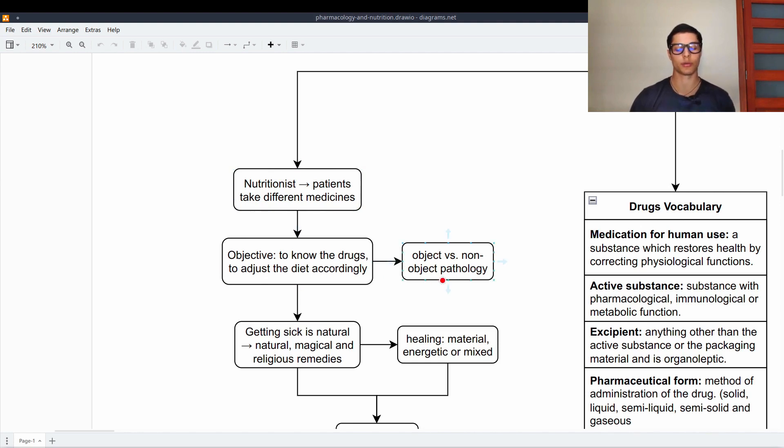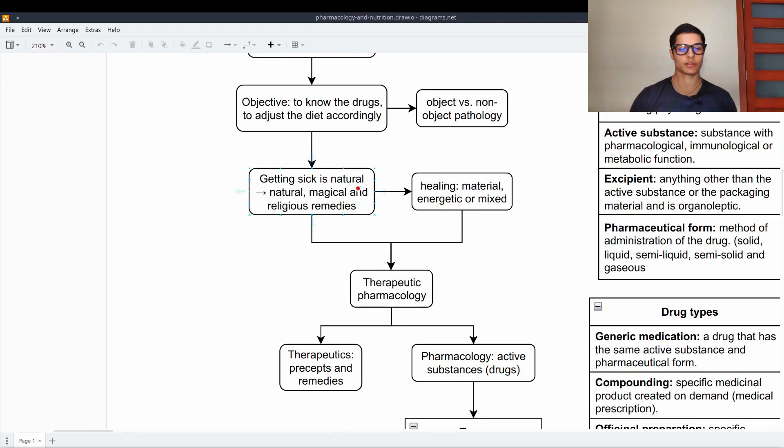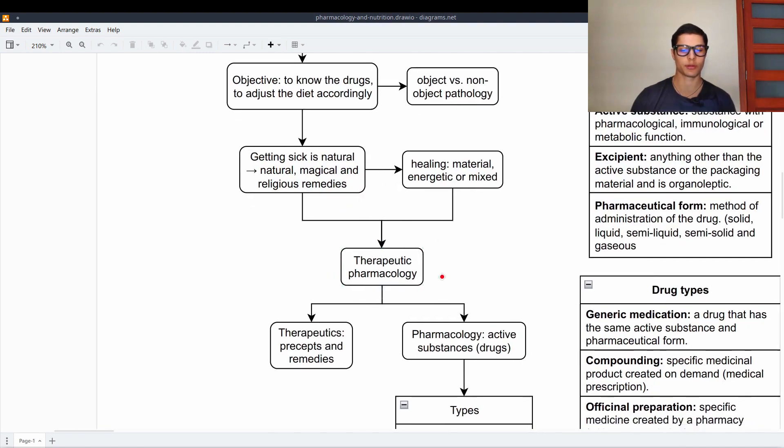This is the object versus non-object pathology. Getting sick is natural, and throughout history there have been natural, magical and religious remedies to those diseases. The objective was to heal. The ways of healing are material, energetic such as acupuncture and mixed ones as well. And then because of that the therapeutic pharmacology appears.